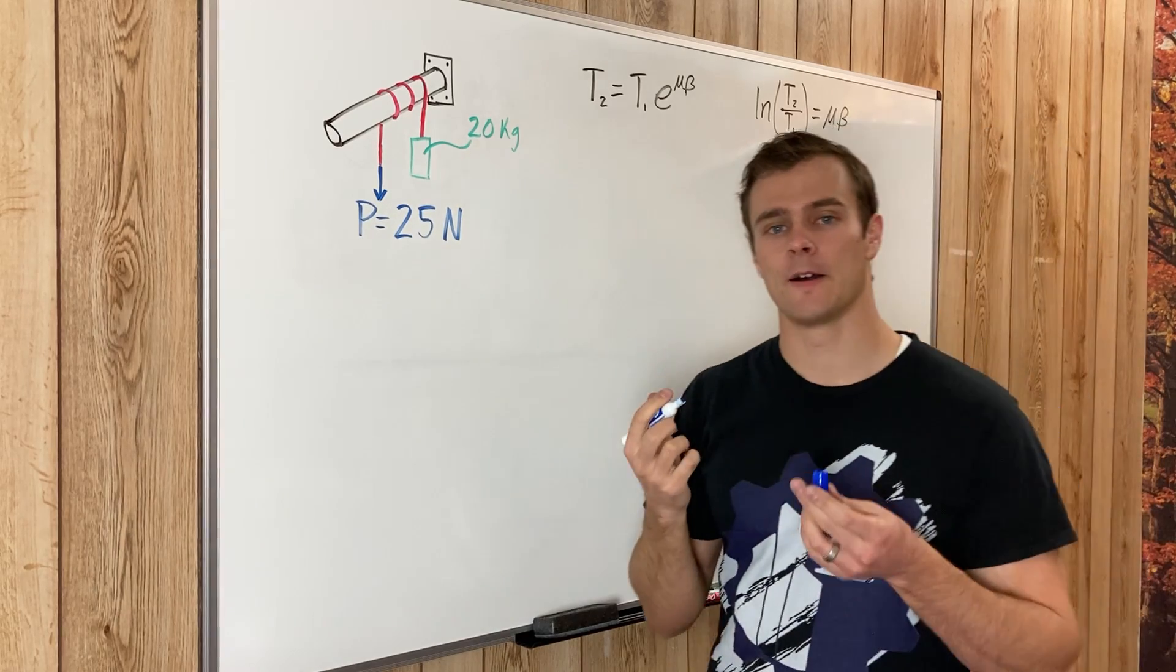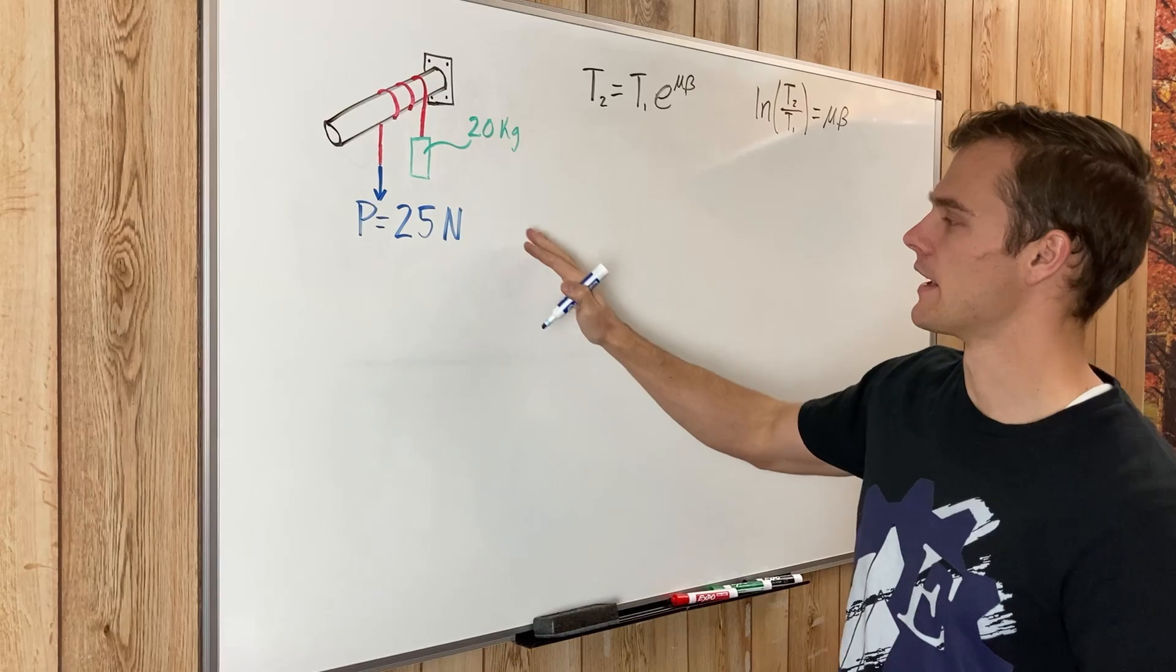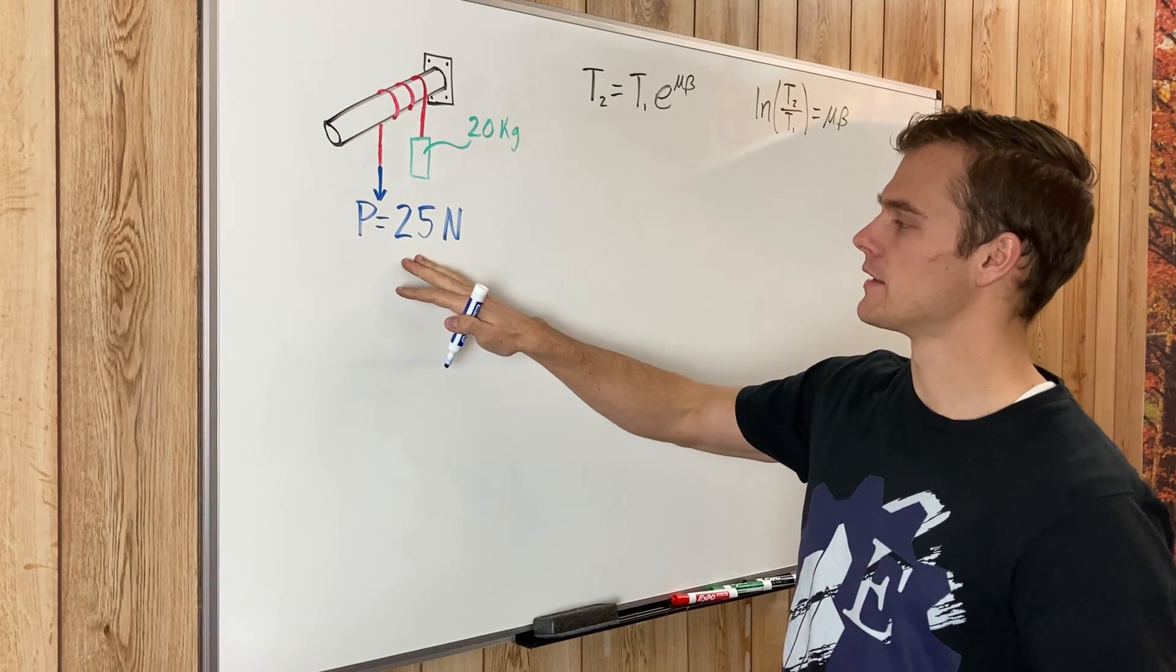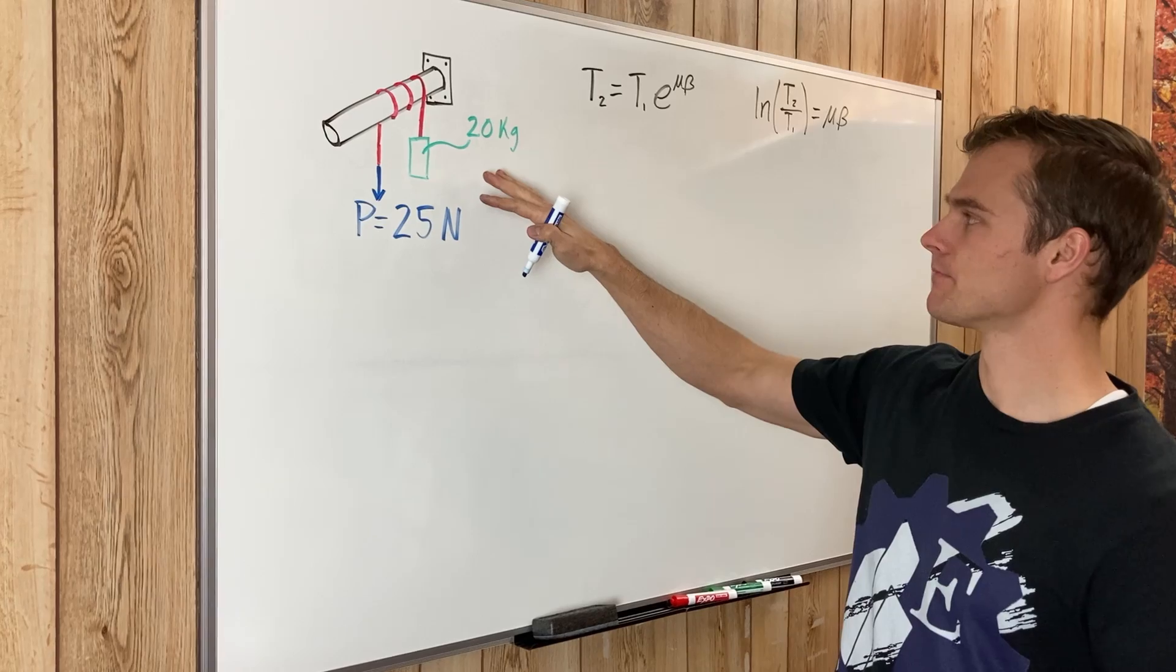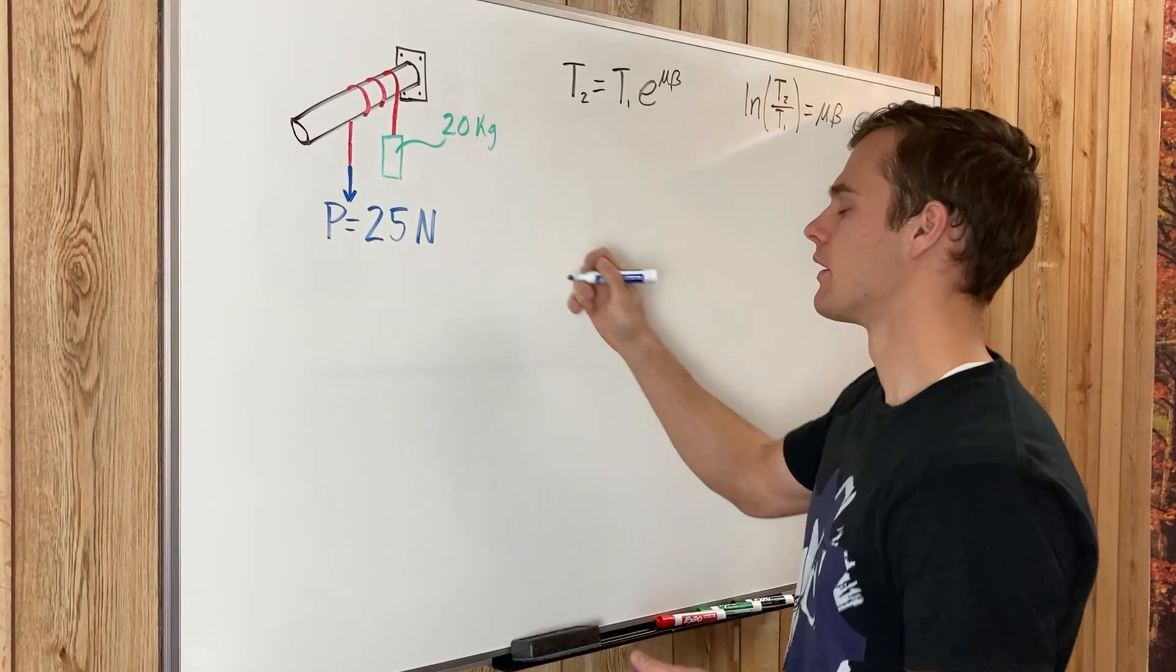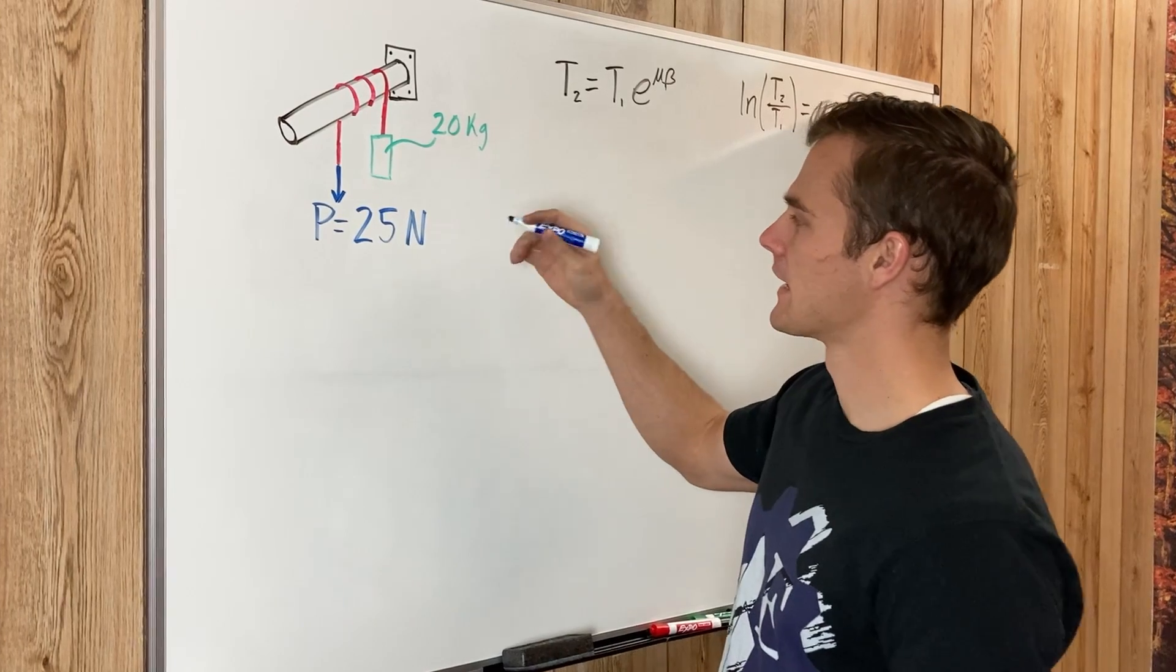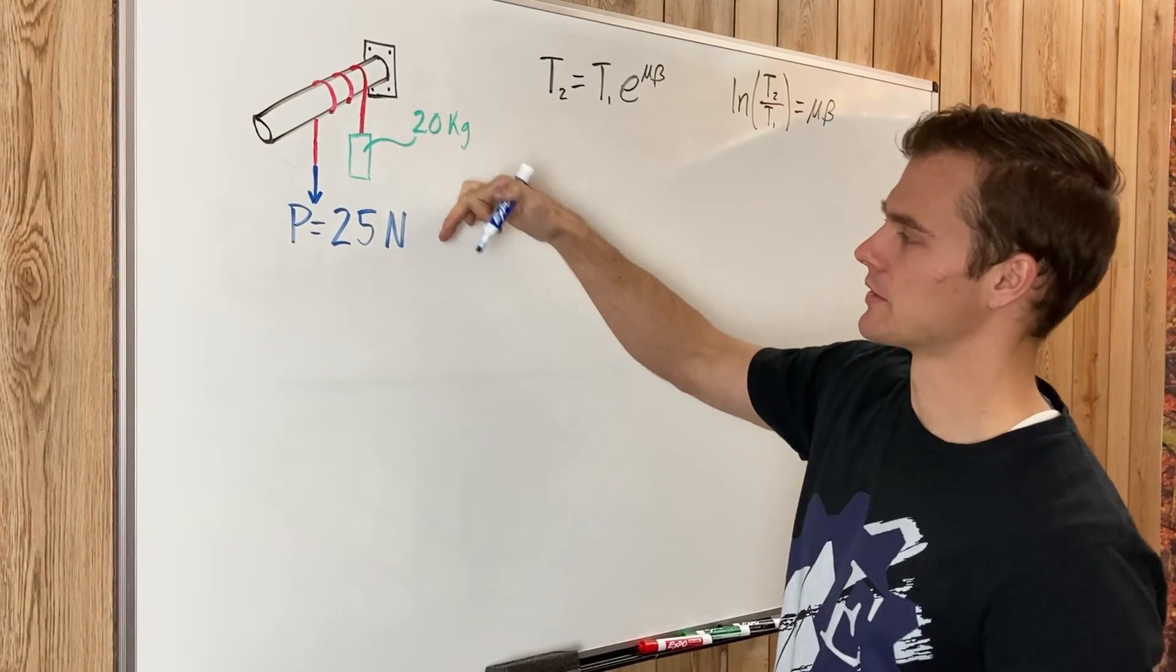But the description of the problem kind of gives us a clue to that, that this weight or this force P is the minimum force needed to keep this 20 kilogram weight from moving downwards. So that kind of indicates that the direction of impending motion is downwards this way.